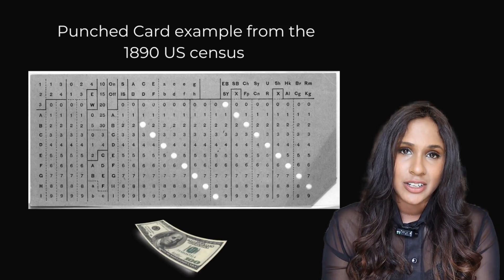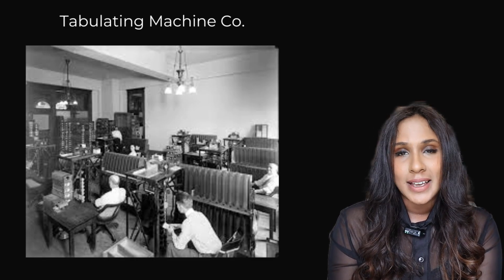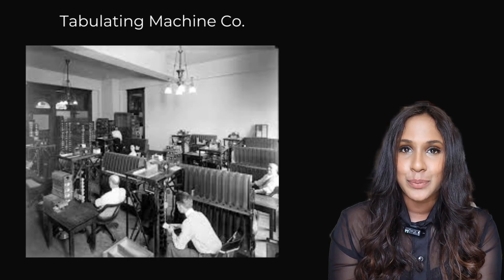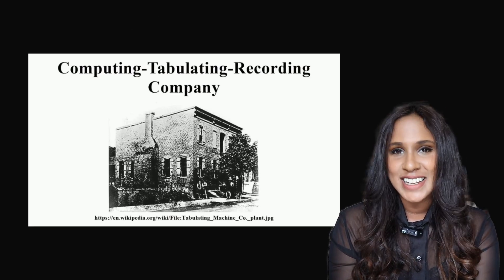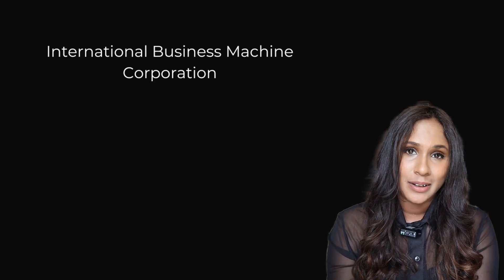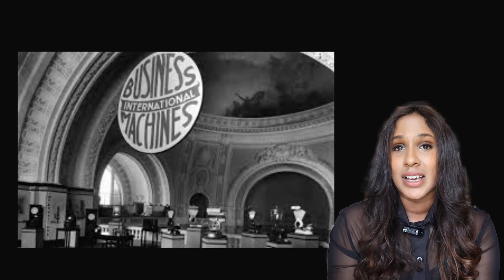Hollerith's punch cards were designed to be the same size as a U.S. dollar bill at the time, making them easy to store and handle. His machines accomplished in one year what would have likely taken nearly 10 years of hand tabulating. Because of his success, in 1896 he founded the Tabulating Machine Company. In 1911, his company merged with three others to form the Computing Tabulating Recording Company. In 1924, this was finally renamed the International Business Machine Corporation — a company we know as IBM. IBM grew to really dominate the early data processing industry, and that's essentially the beginning of computer programming.